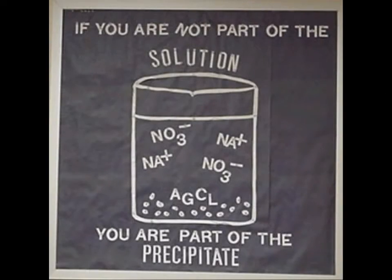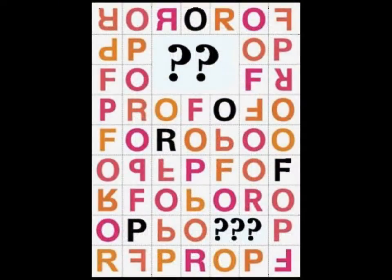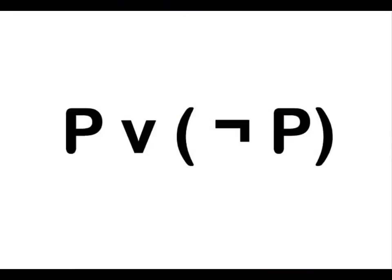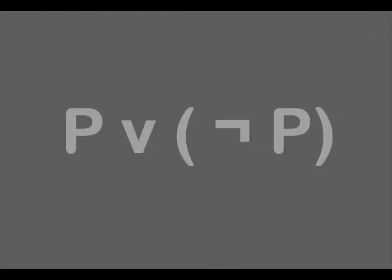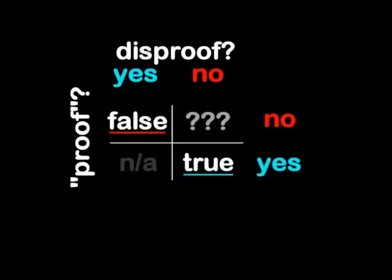Strictly, the term proof applies only to mathematics and specially constructed logical syllogisms. However, since disproof is a legitimate term, I shall use proof with air quotes implied. A propositional premise is either true or false. There can be many more false propositions than true propositions. A false premise can be either disproven, not yet disproven, or logically impossible to disprove. A true premise can be either proven, not yet proven, or technically impossible to prove. This diagram simplifies the possibilities.